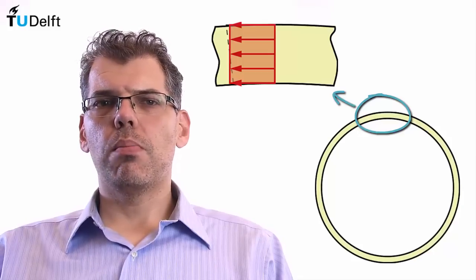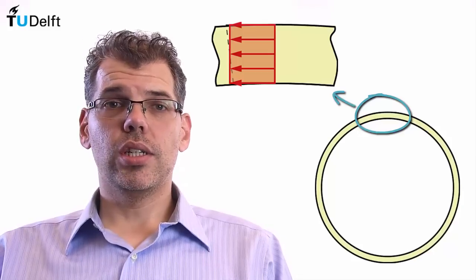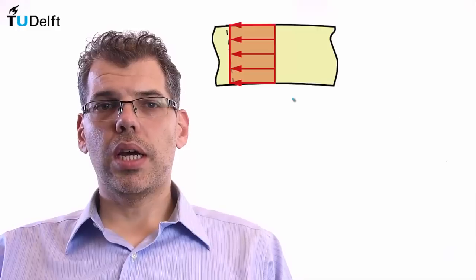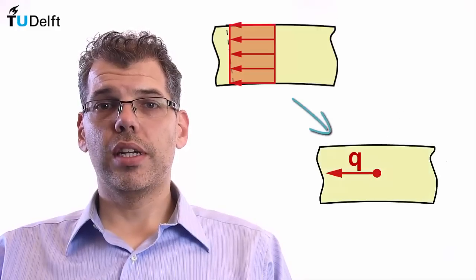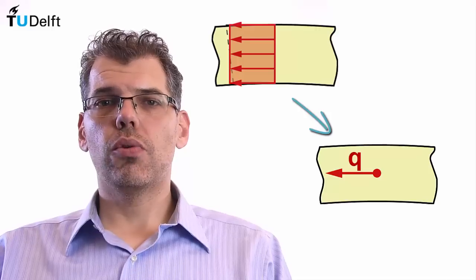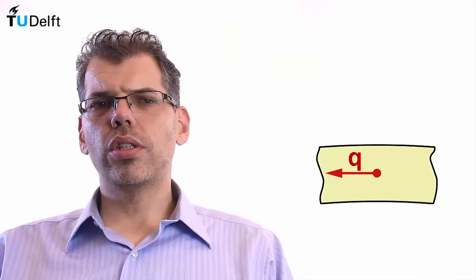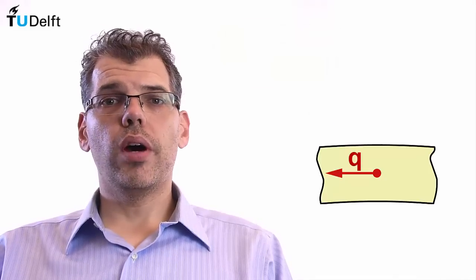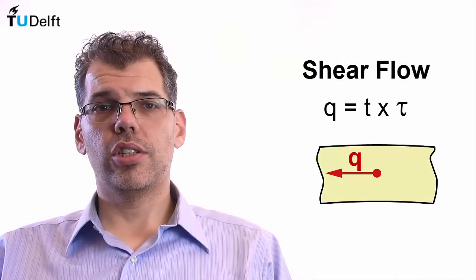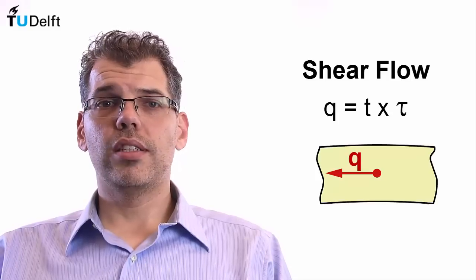To help remember that we are making this simplification, it is convenient to multiply the stress by the wall thickness resulting in a shear force per unit length around the perimeter of the shaft. This quantity represents the flow of the shear force around the cross-section and is thus referred to as the shear flow.